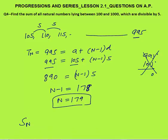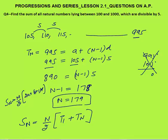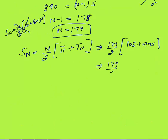Now the sum of n terms = n/2 × (t₁ + tₙ). Since we know the first and last terms, apply this simpler formula using common sense — no need for the longer formula. Sum = 179/2 × (105 + 995).